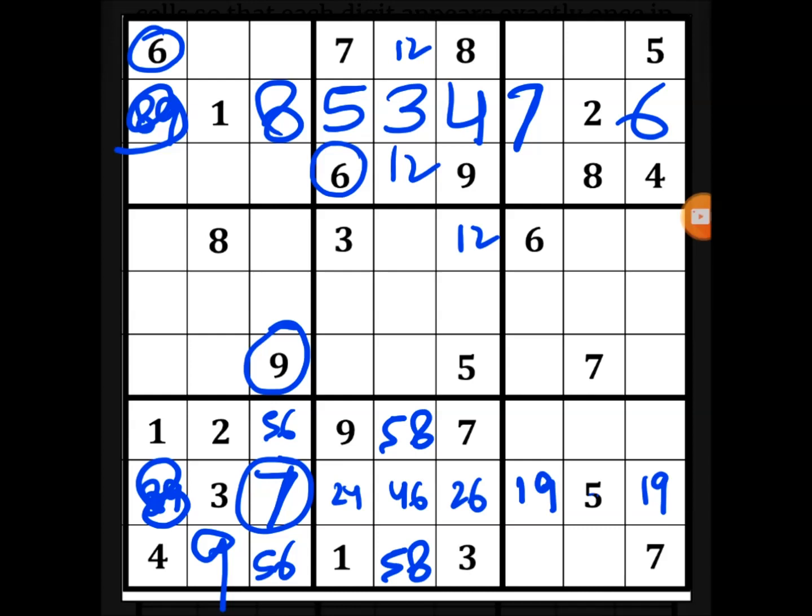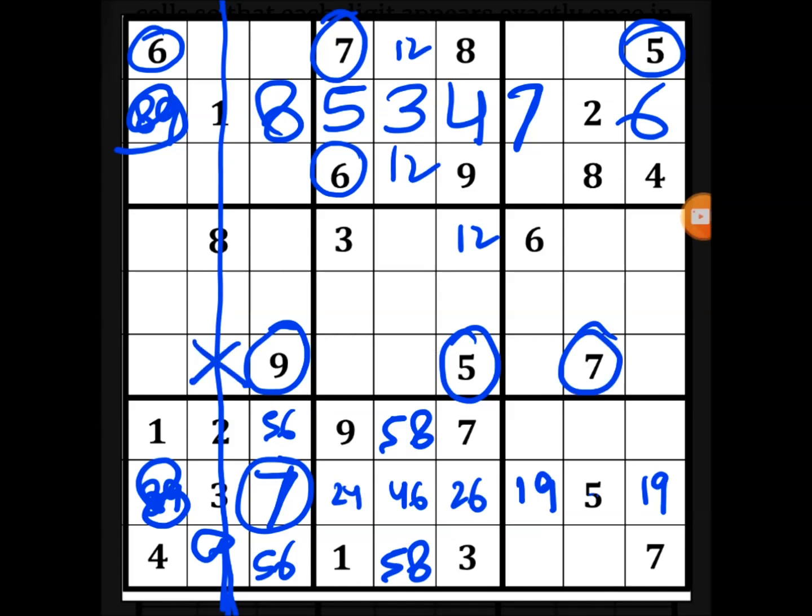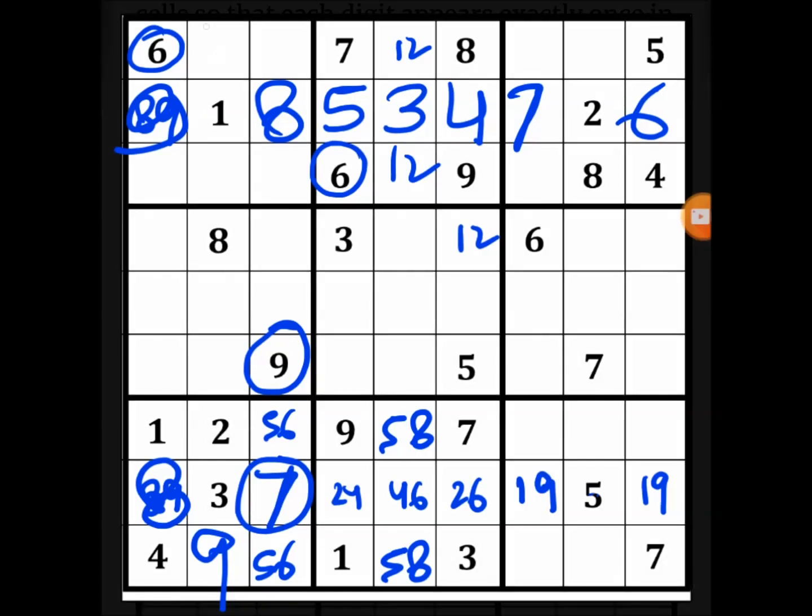Now similarly if you see column 2, 7 and 5 is here and 5 and 7 is here, that means 5-7 cannot go here and 5-7 cannot go here. That means these 2 cells should have 4-6 pair, and since 6 is here this will be 4.